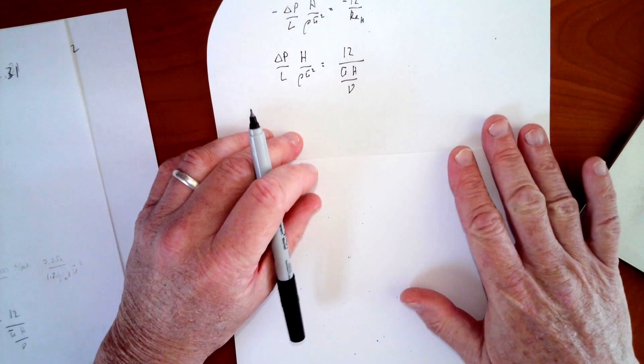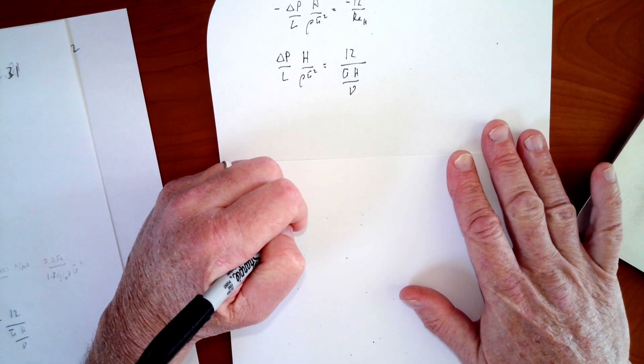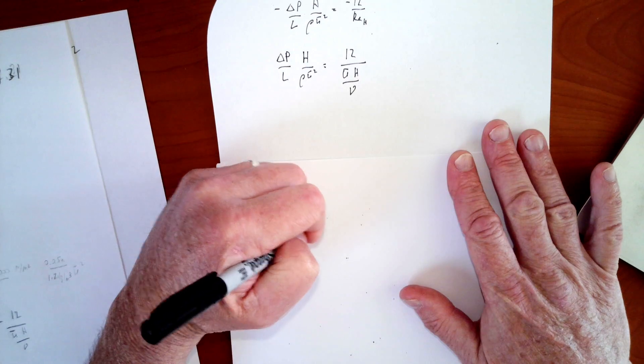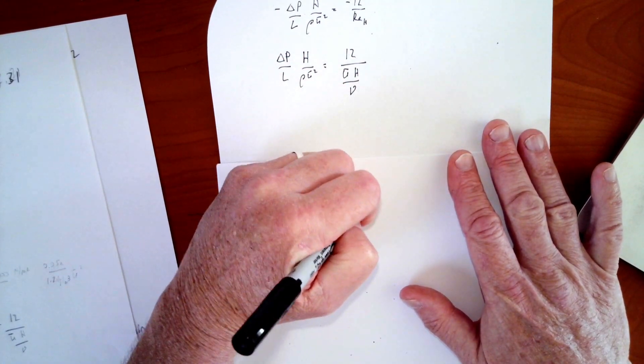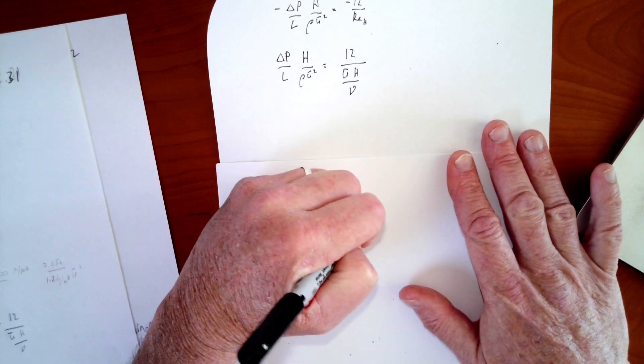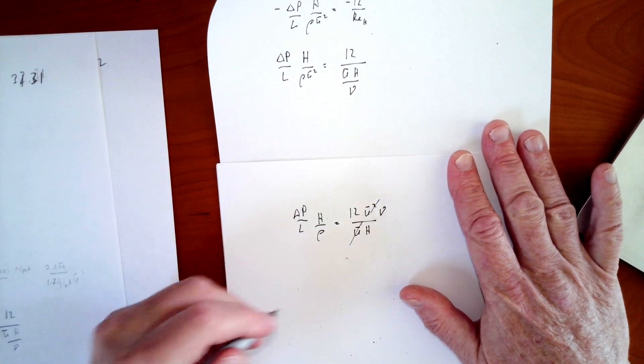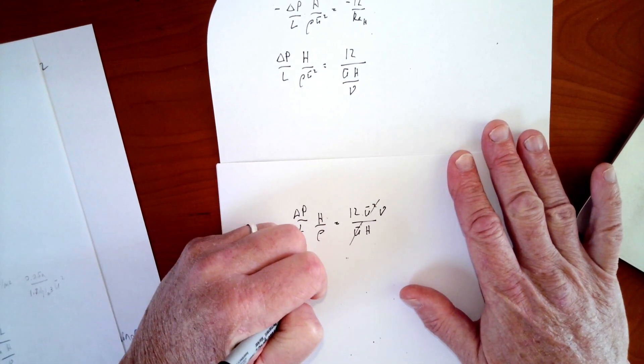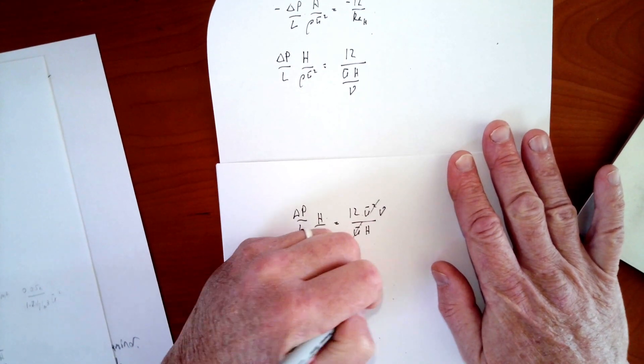Now I will rearrange everything to put u bar on one side or the other. I'll move these u bars over here. So I've got delta p over l on the left. I've got an h on the left. I'm going to leave the rho on the left as well. I'm going to move u bar squared over to the right. So I've got 12 u bar squared over u bar h and I can move the nu up here.